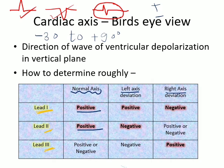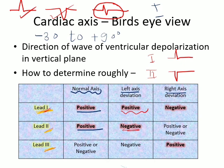To identify left axis deviation, remember: if Lead I has a positive QRS complex and Lead II has a negative QRS complex, it means there is left axis deviation.